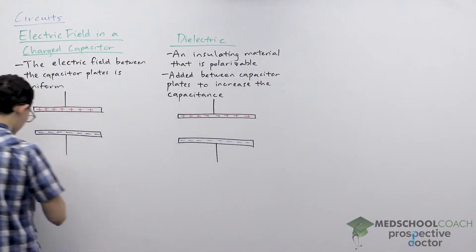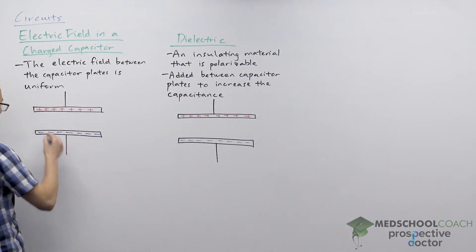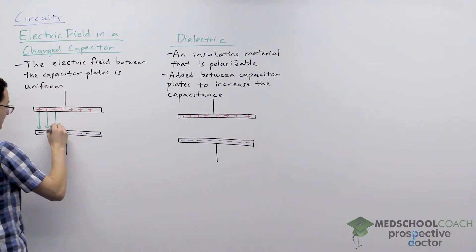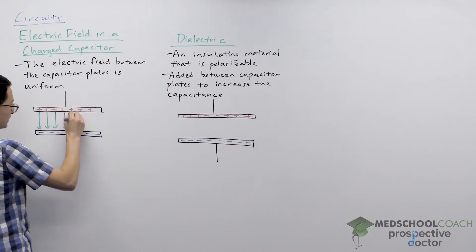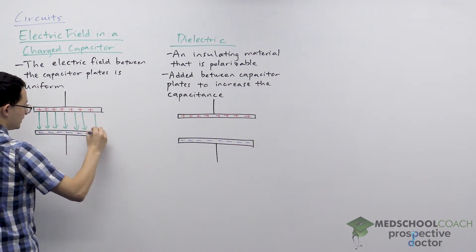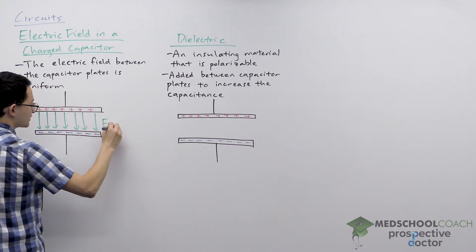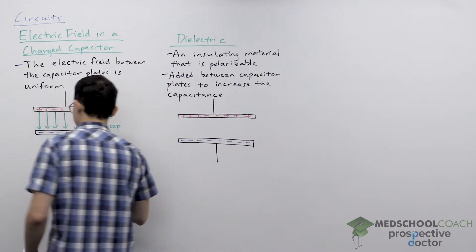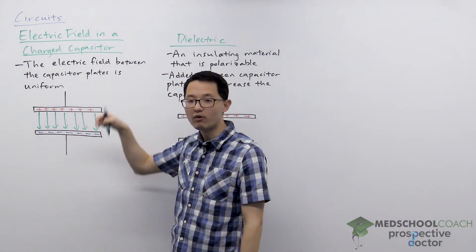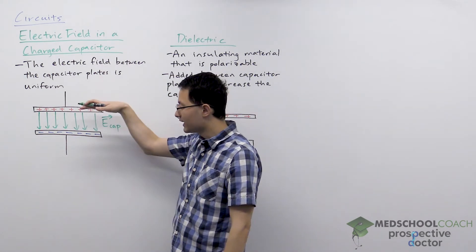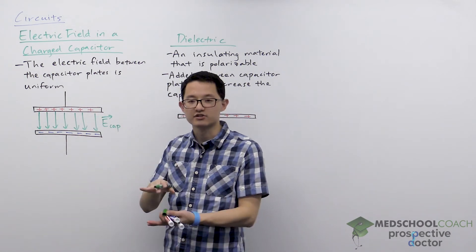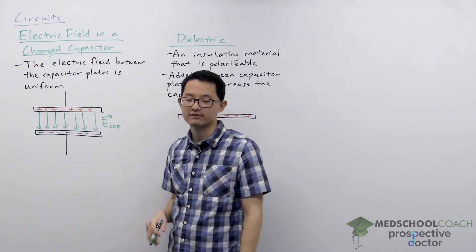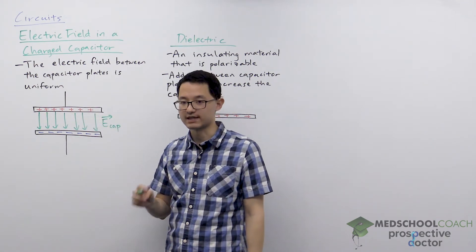What we mean by uniform is that the magnitude and the direction of the electric field between the capacitor plates is the same — it's constant. And if you recall, electric fields point away from positive charges and towards negative charges. The arrows I'm drawing represent the electric field of the capacitor, and you can see how it's uniform — all pointing down. The charge is uniformly distributed, so the magnitude of this electric field is also the same.